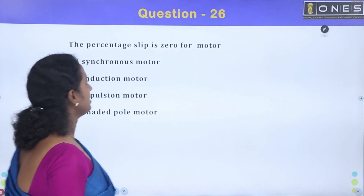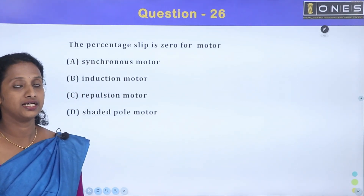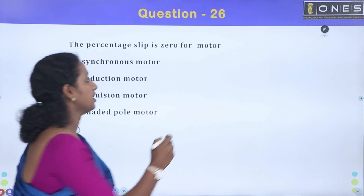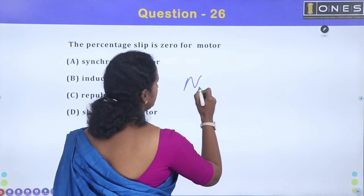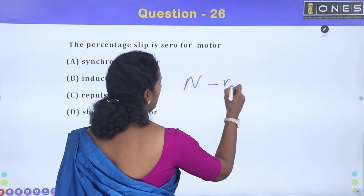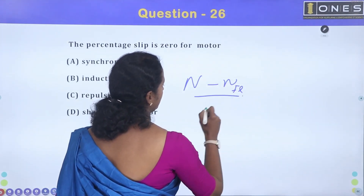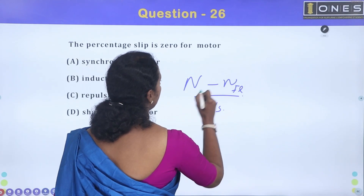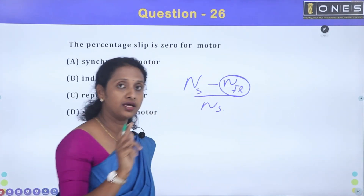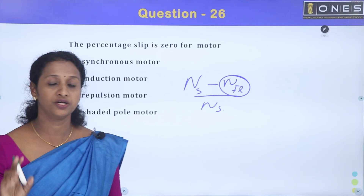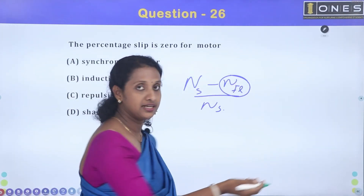Next: if percentage slip is 0, which type of motor is it? The answer is synchronous motor. Slip is the difference between no-load speed and full-load speed. In a synchronous motor, the rotor runs at synchronous speed, so the slip is zero.